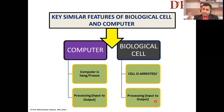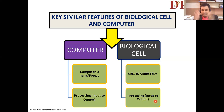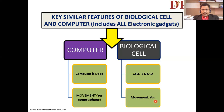Processing is a critical function — without processing, nothing is possible in the computer. Our biological cell also has its own processing system: DNA is processed into RNA, and RNA is converted into protein.